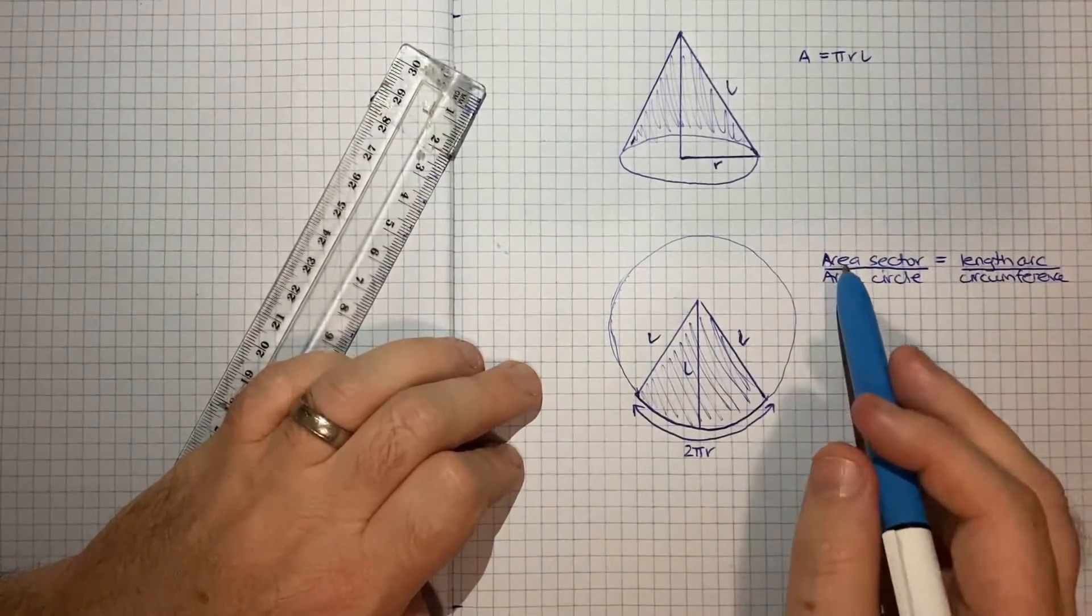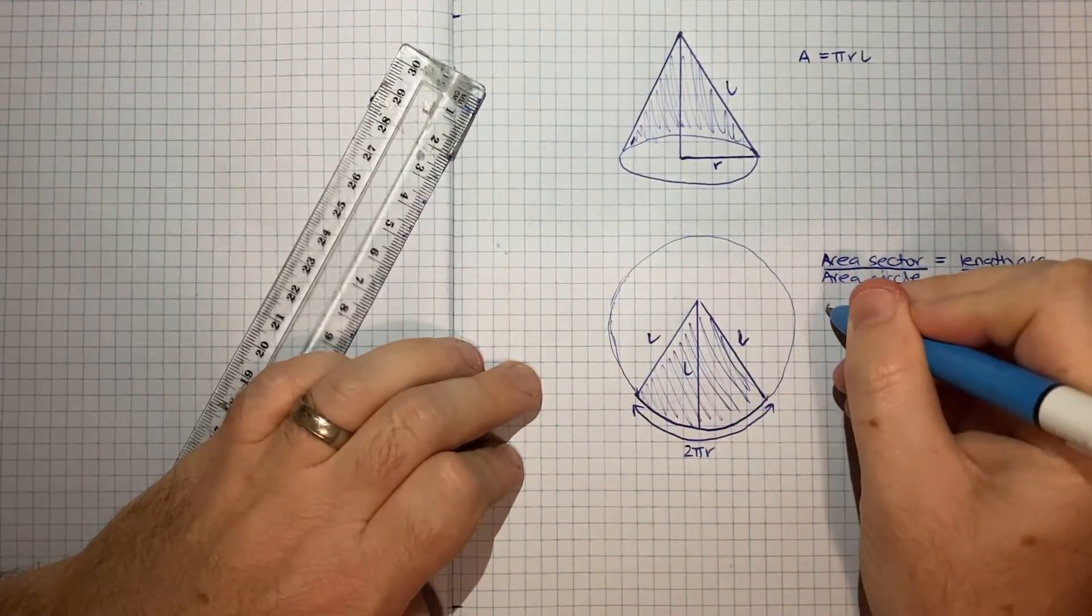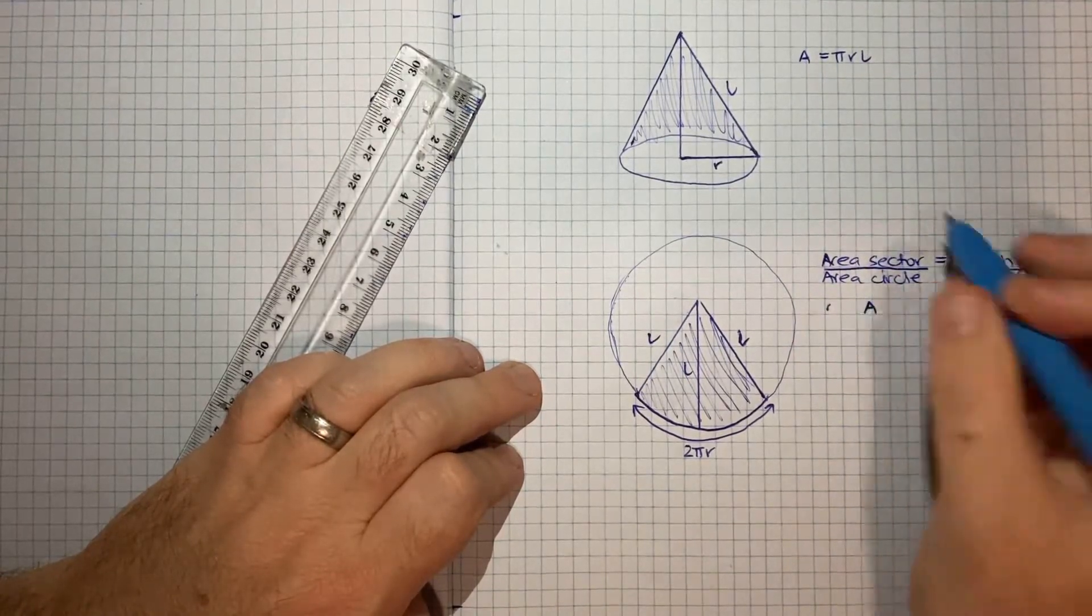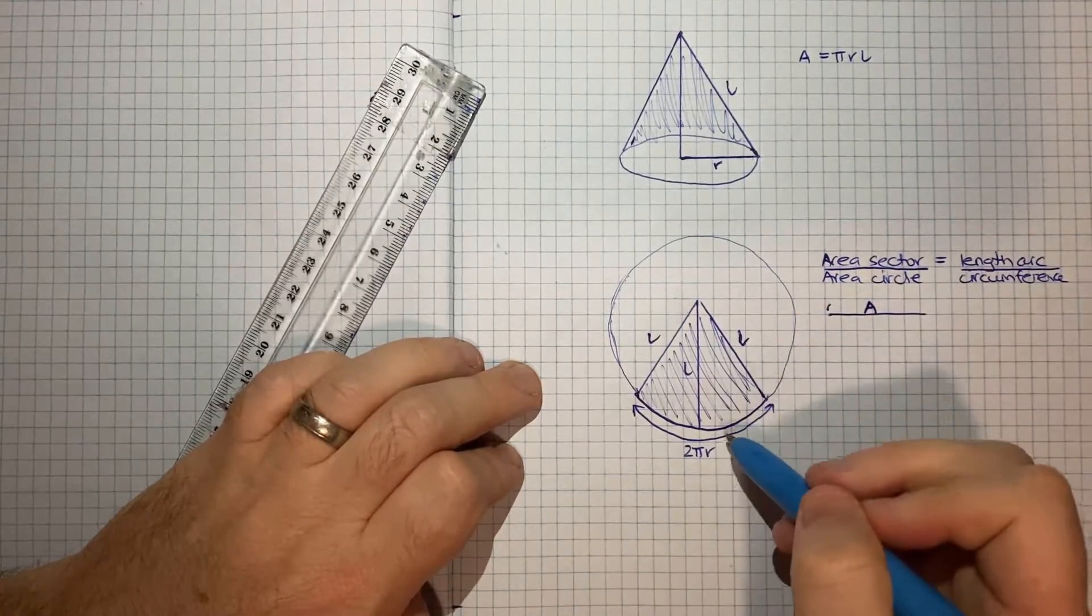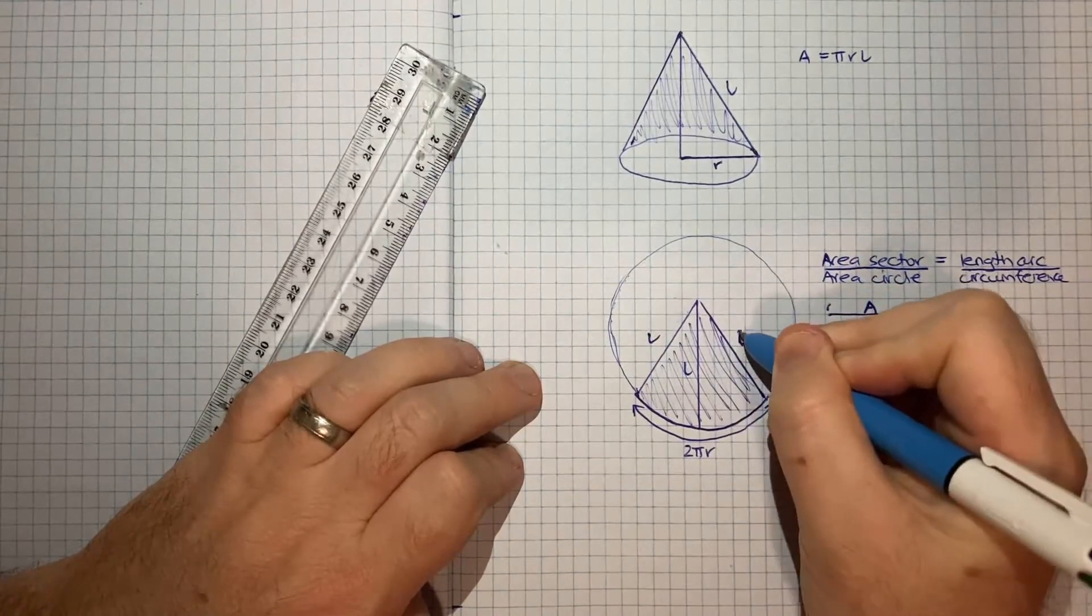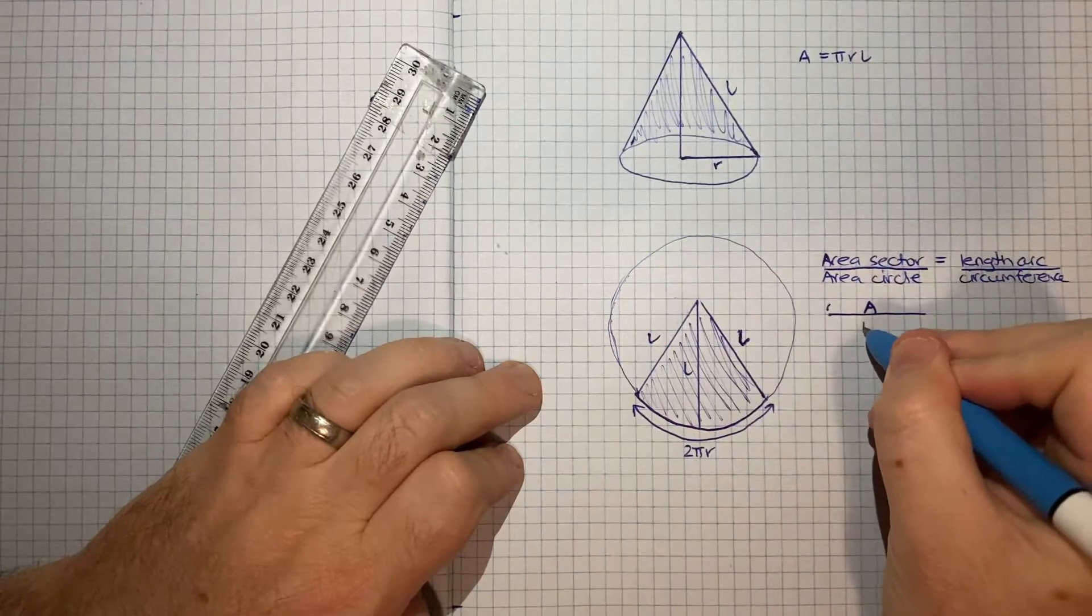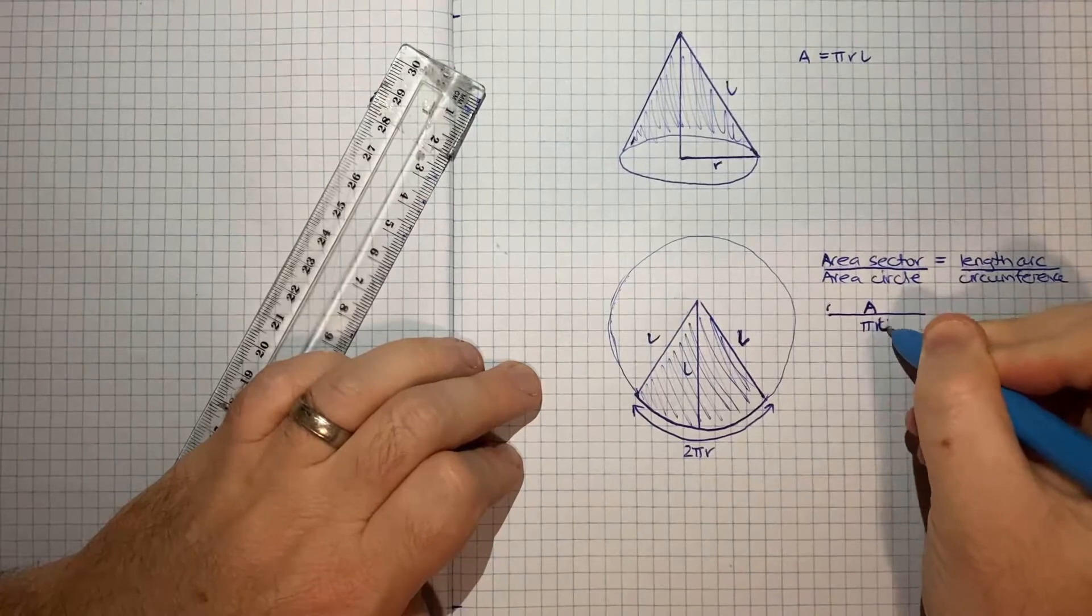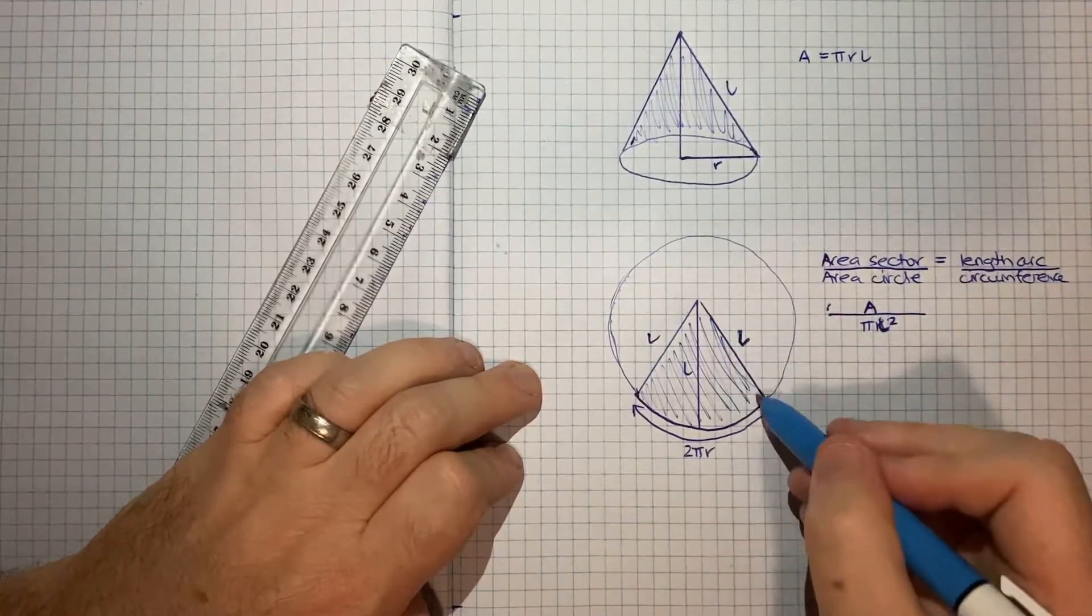So the area of this sector, which is what we're concerned with, I might just call that A, because that's what we're told the area of the cone is, divided by the area of this whole circle. Now this particular circle has a radius of L, so the area of the whole circle would be pi L squared, since that's the radius here.